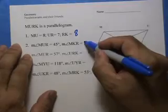Opposite angles of a parallelogram are congruent. So it's 45.